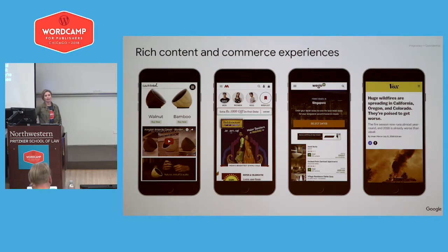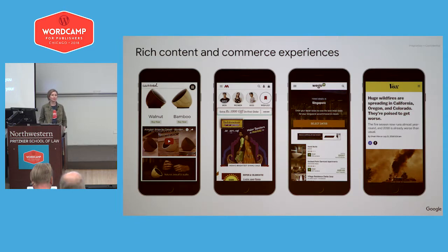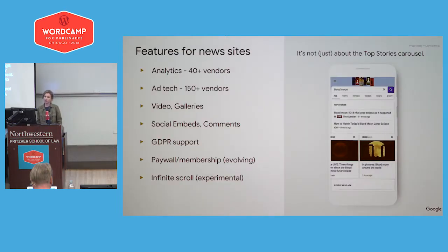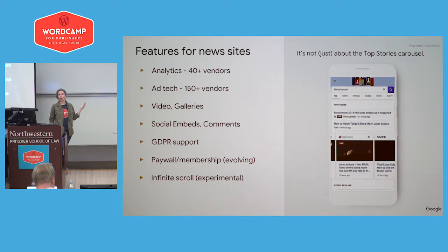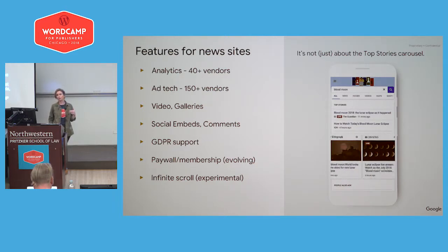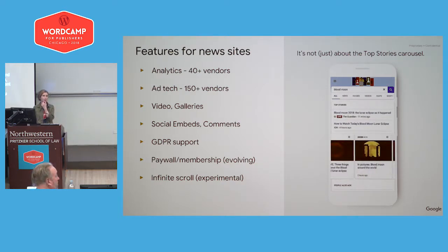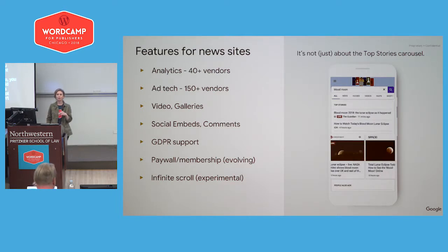If your current vision of AMP is that of a stripped-down version of a standard page, that's something we'd very much hope to correct. AMP is now being used to build rich content and commerce experiences, not only for news publishers but across verticals. Hundreds of third-party integrators support AMP — which is key, because in order for AMP to be a viable path for publishers, it needs to support your business and analytics needs. If the last time you paid attention was six months ago, there's probably a lot there today that you didn't see before, and six months from now there'll be a lot more.